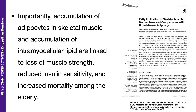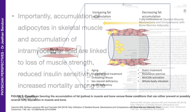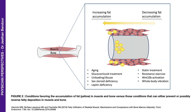But this fat deposition happens in the young as well. The conditions favoring the accumulation of fat in muscle and bone are ageing, glucocorticoid treatment, unloading or disuse of muscle, sex steroid deficiency, or leptin deficiency.